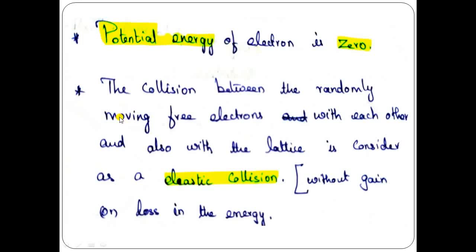The fourth postulate concerns collision. When free electrons move randomly throughout the metal, they collide with each other and also with the lattice. The lattice is the arrangement of atoms — the place where atoms are present in the metal is known as the lattice point. When a free electron is moving and collides, it will not lose its energy or gain any energy from neighboring electrons. This is called elastic collision. We consider elastic collisions between free electrons and the lattice.